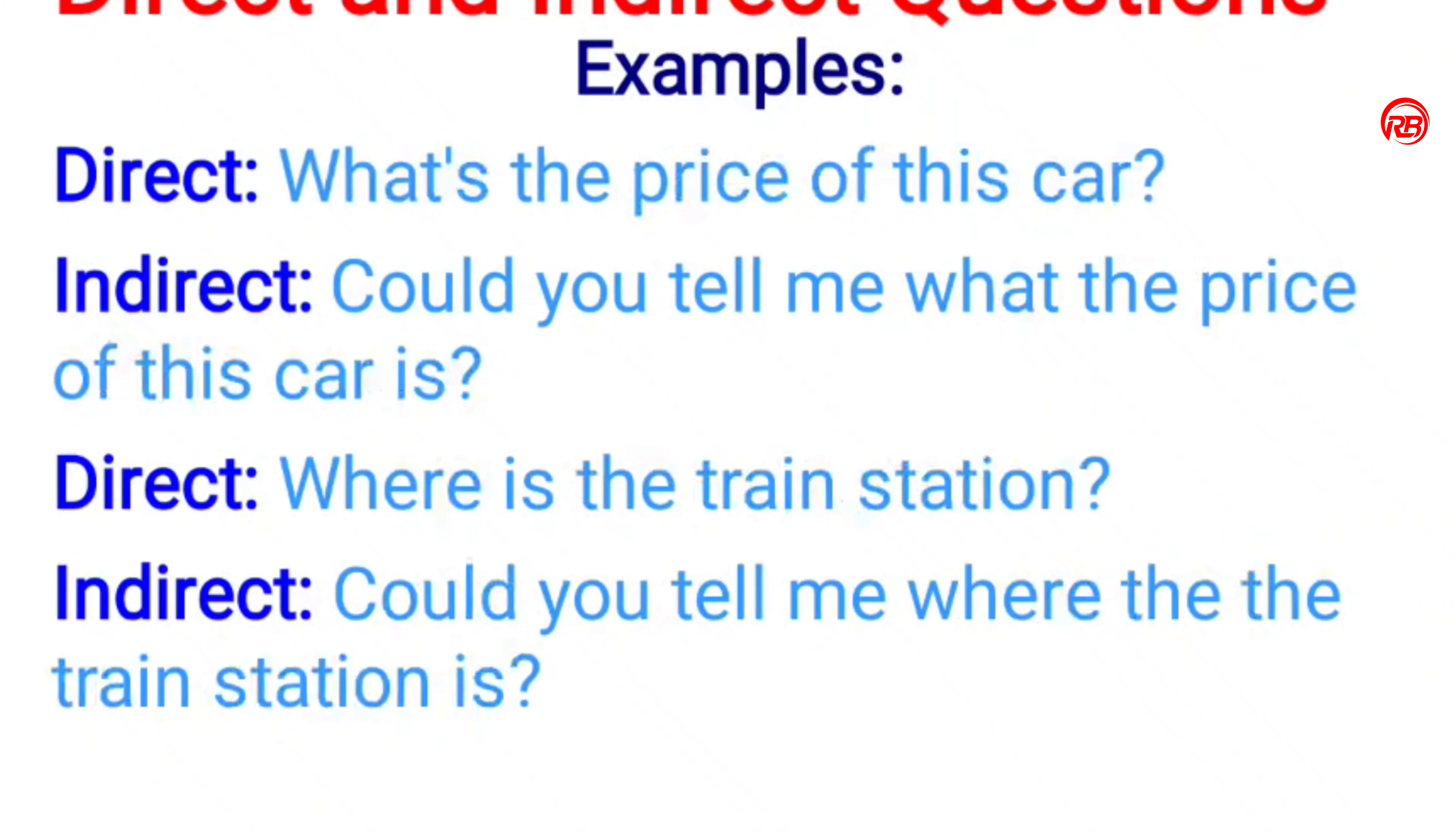Example five. Direct: What's the price of this car? Indirect: Could you tell me what the price of this car is? Example six. Direct: Where is the train station? Indirect: Could you tell me where the train station is?